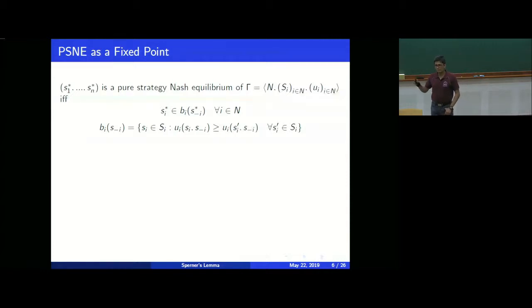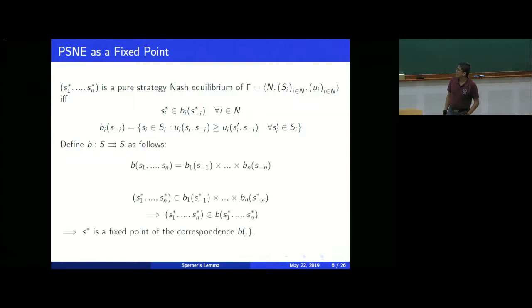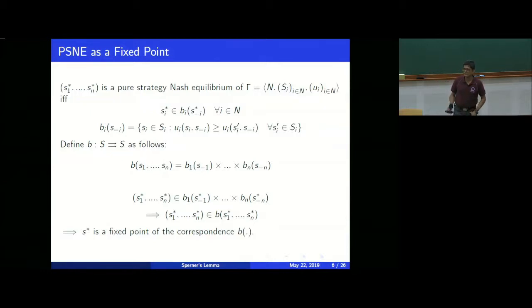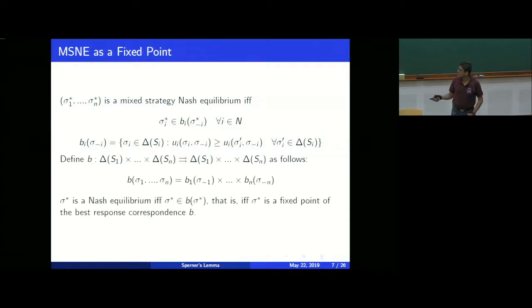I am not giving a proper proof here, just a very rough outline. You have already seen that a pure strategy Nash equilibrium looks something like this: you take the best response strategy that player i can play against all other players. If all others are playing s* minus i, the best response is for player i to play s* i. You can define a correspondence, and then say that a fixed point in this correspondence is equivalent to a Nash equilibrium. Similarly, for mixed strategy Nash equilibrium, a similar approach applies.